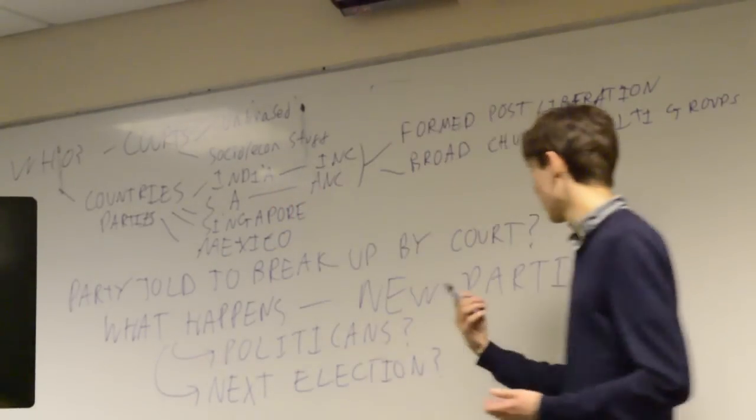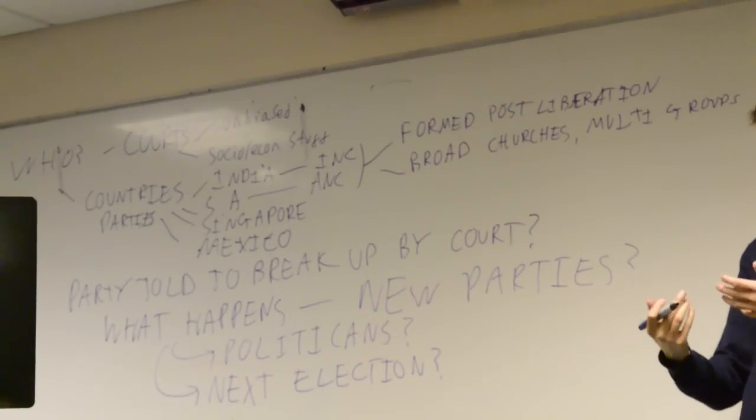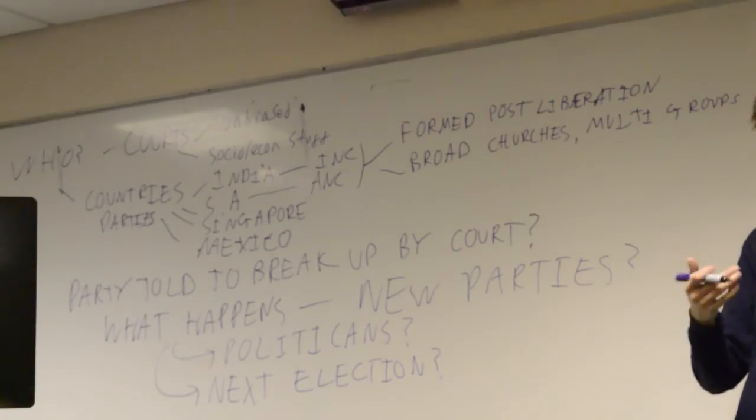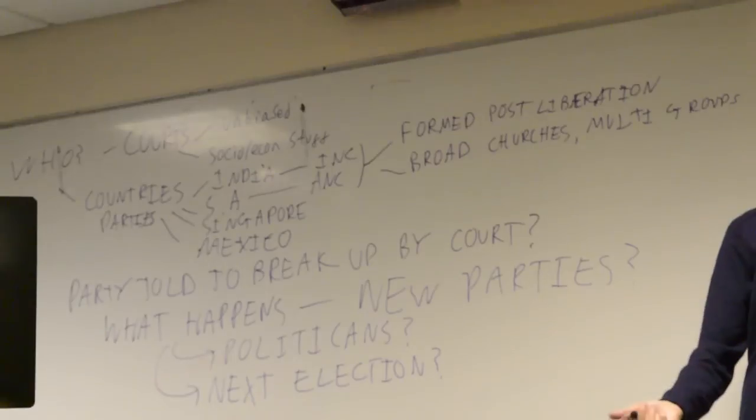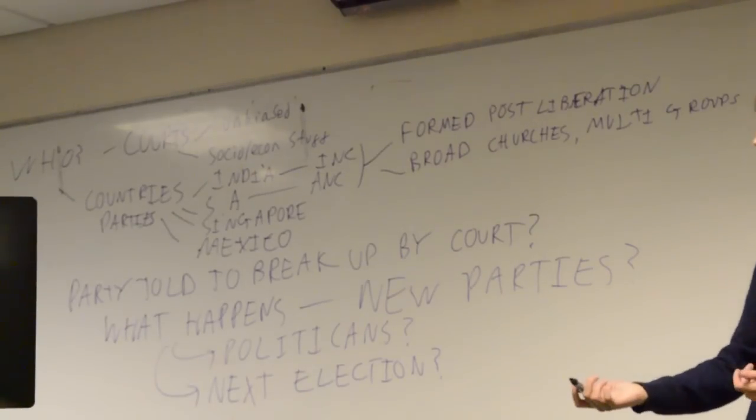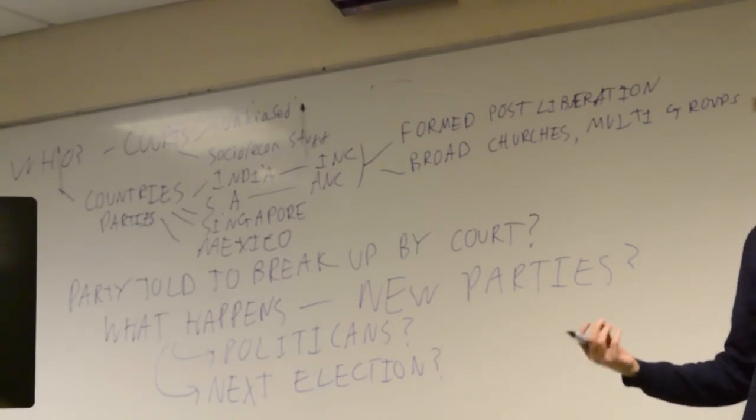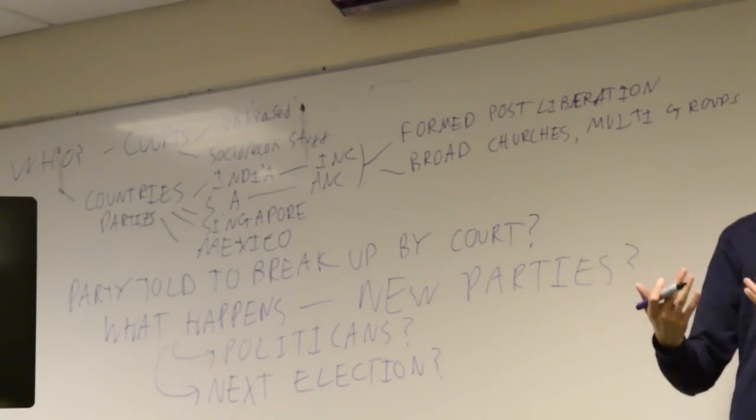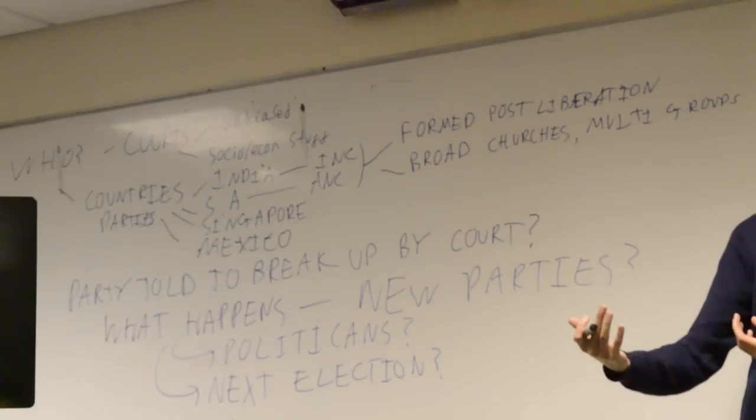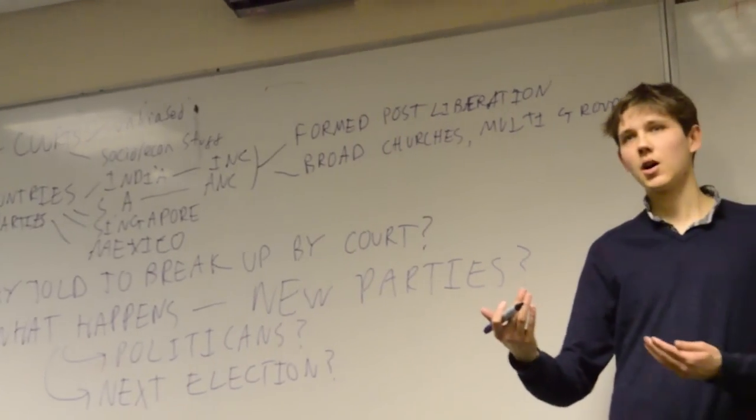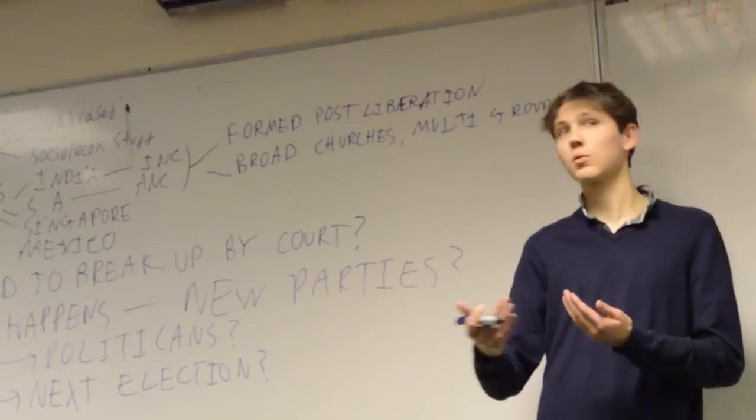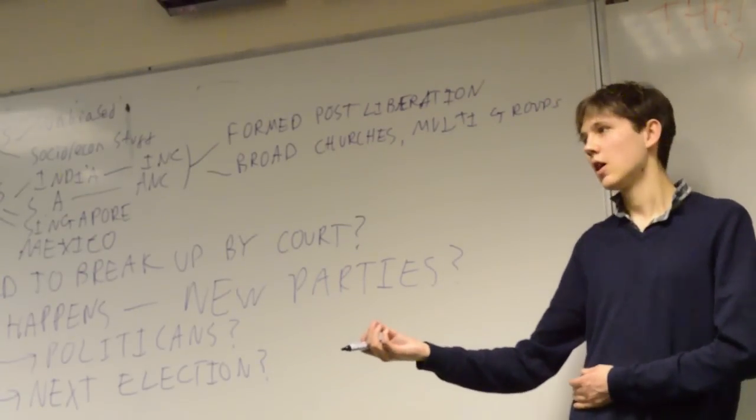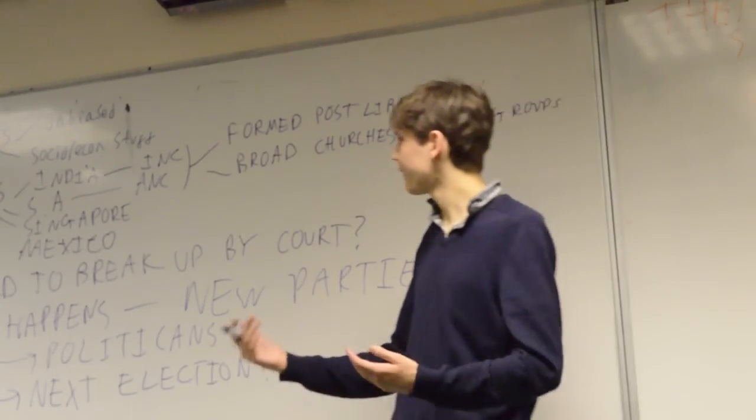So we're trying to work out like are we just going to get like the ANC become six different parties who all agree to go into coalition with each other when they get into power, and they still have the 70% of the voters or even more I think, and nothing changes? Or are they going to really fight elections against each other? What about politicians? How do they react? How does the next election happen? Does this mean that we don't have a discussion about black poverty in South Africa because we're having a discussion in the election about this decision by the court? And whatever else.